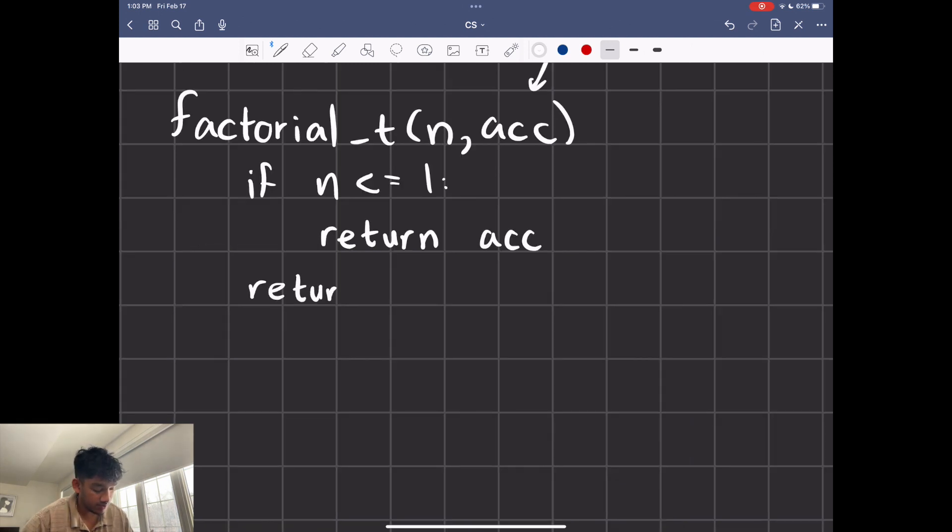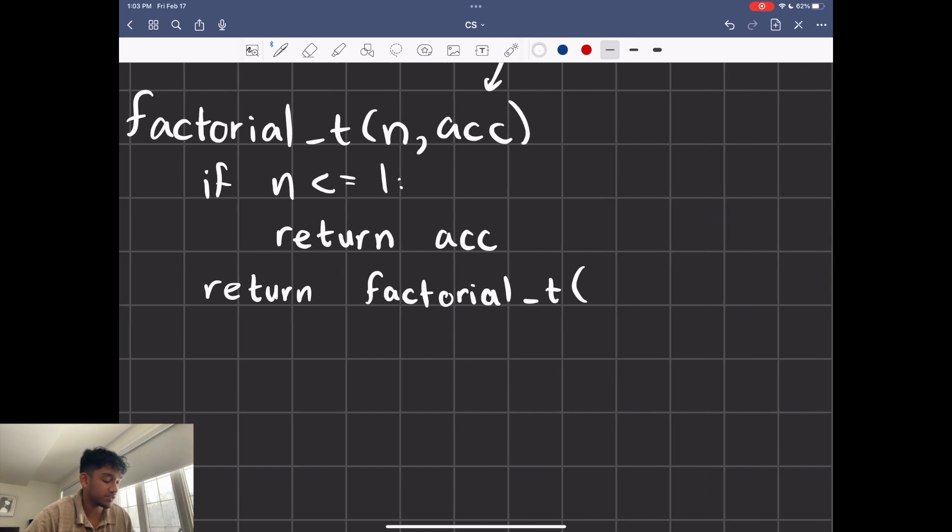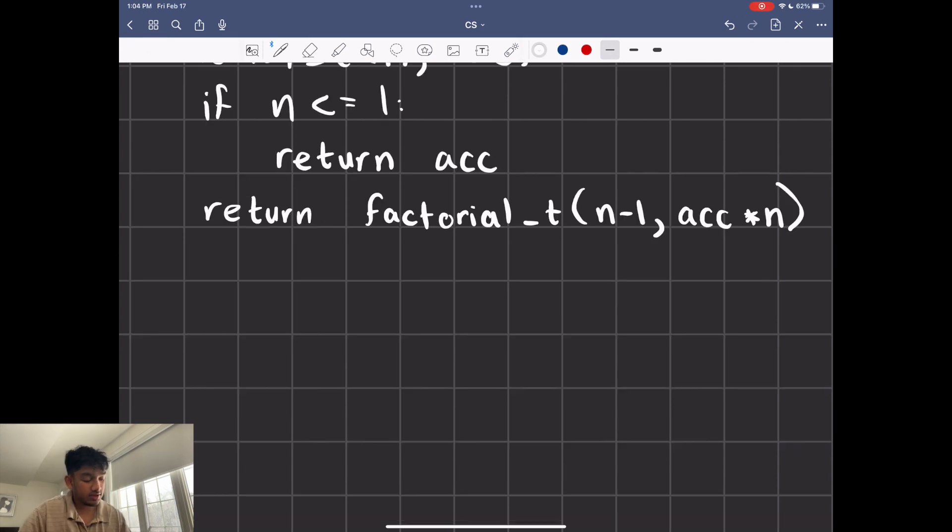Now let's talk about the return part. So it's still going to be factorial_t. We still need that recursive call. But we have two arguments now. So n, like last time, we're going to do n minus 1. And this time for the accumulator, what we're going to do is return accumulator times n. You may not see why, but let's just do factorial.